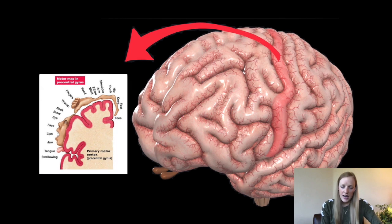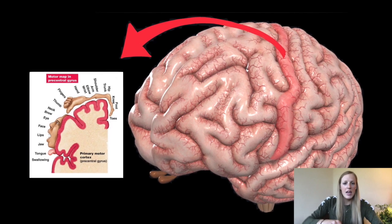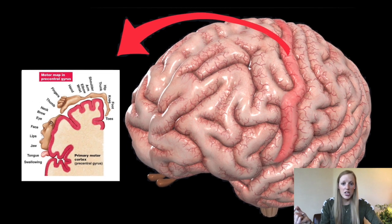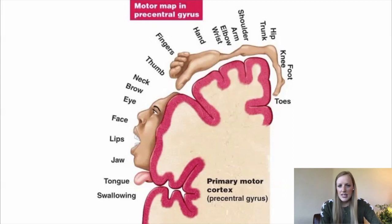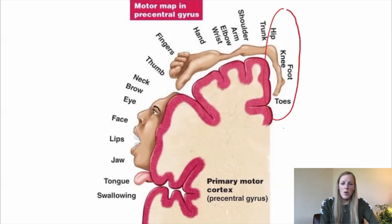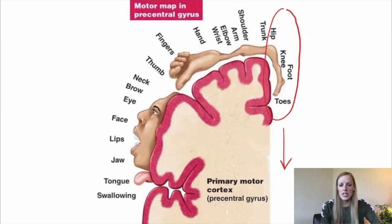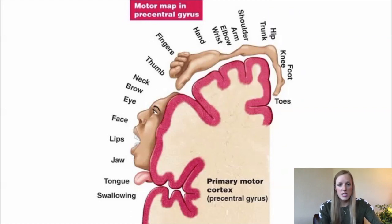Our homunculus is simply a map that's housed on the cortex of our brain about the rest of our body. If we take a look at our precentral gyrus and look at the cross section, we can see our homunculus map. Notice that our lower extremity hangs down in the longitudinal fissure of our brain. We know the anterior cerebral artery supplies the frontal lobe and runs in that longitudinal fissure. That's why we're going to see the lower extremities more affected than the upper extremities with our hemiparesis and hemiplegia.